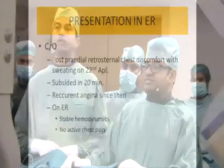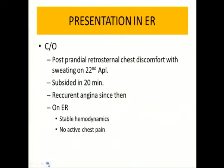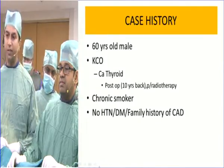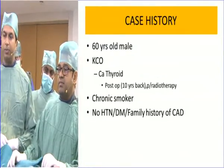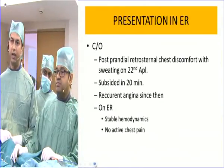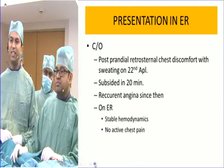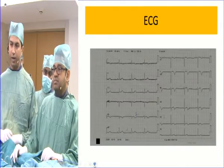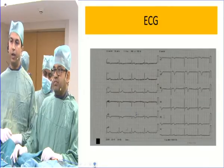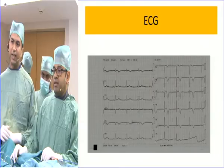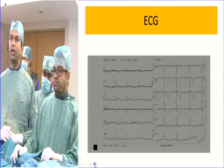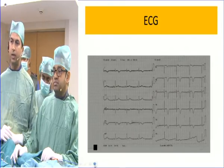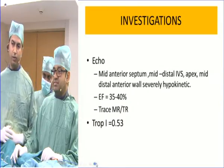This is a 60-year-old gentleman, an active smoker with no history of diabetes or hypertension. He had been operated on for a carcinoma thyroid about 10 years back and underwent radiotherapy for that — he is not cured. He presented with a seven-day history of unstable angina, with rest angina for the last 24 hours. He was hemodynamically stable. ECG shows biphasic T-waves and deep inverted T-waves with a preserved R-wave, indicating a proximal LAD lesion. Echo showed EF of 35–40%, and troponins were mildly elevated.